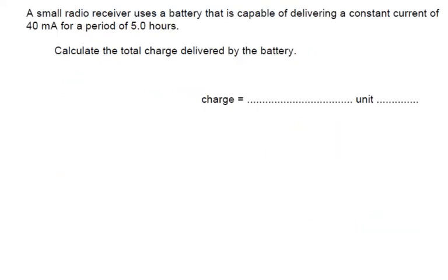A small radio receiver uses a battery that is capable of delivering a constant current of 40 milliamps for a period of 5 hours. Calculate the total charge delivered by the battery. So we've got 40 milliamps. We need to convert that into amps, so we'll have to divide by 1000. So we're going to get 0.04 amps. So Q equals IT.